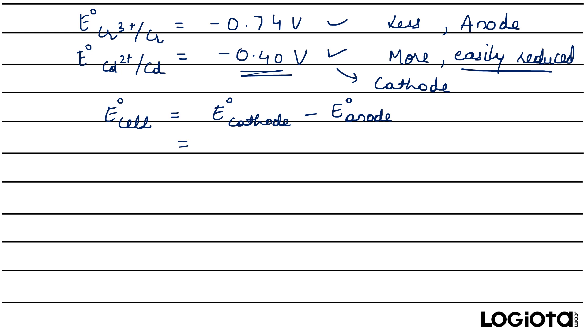Now you can put the values here directly. Because cathode is cadmium we will put -0.40 volts minus E° of anode which is -0.74. So we will write it like this and from here the answer we'll get is +0.34 volts.